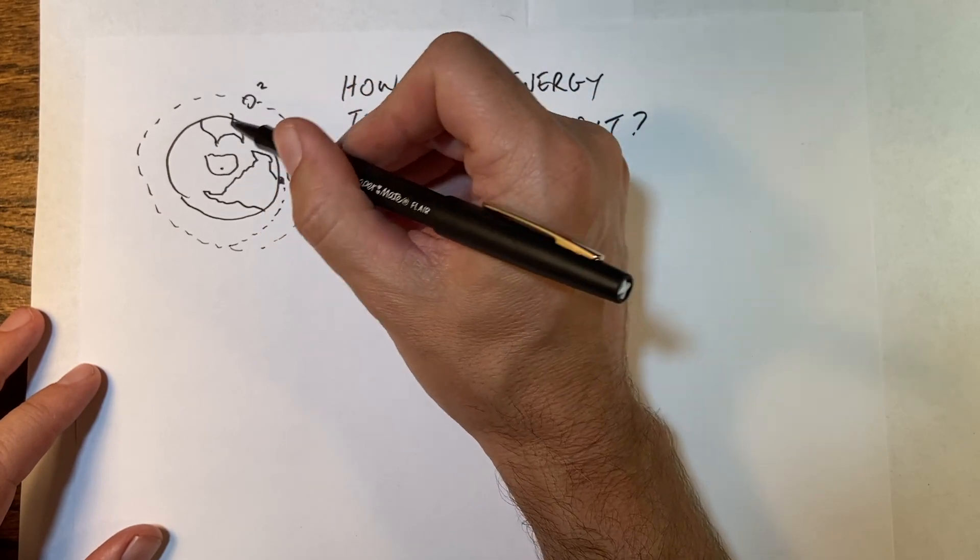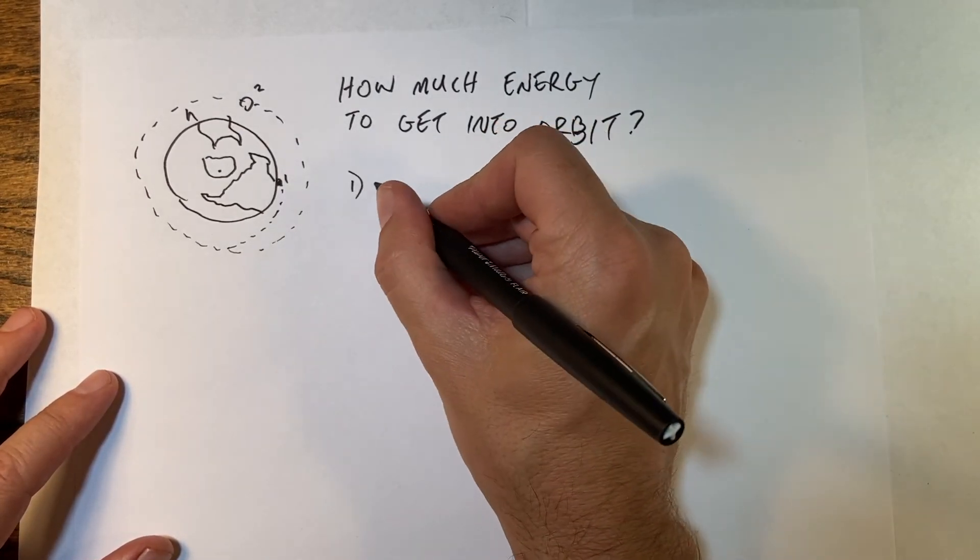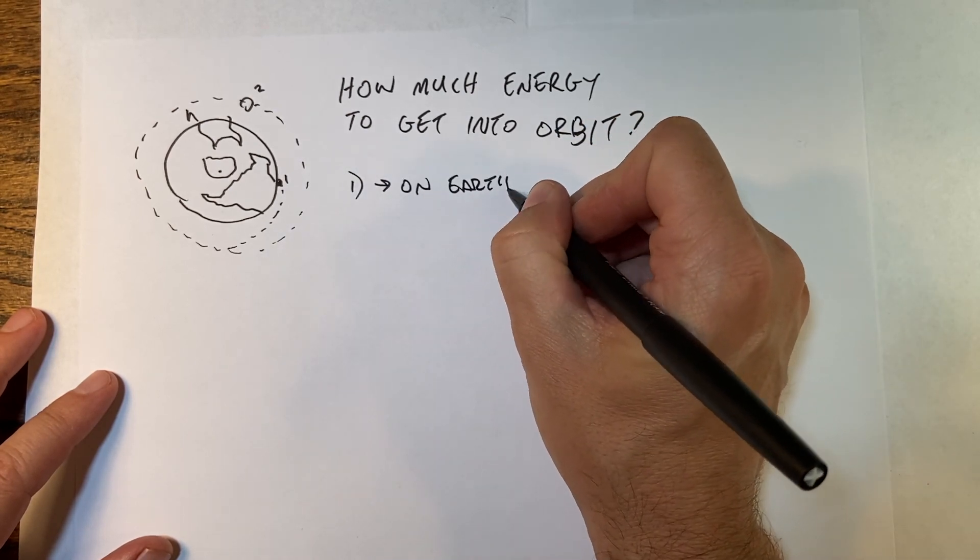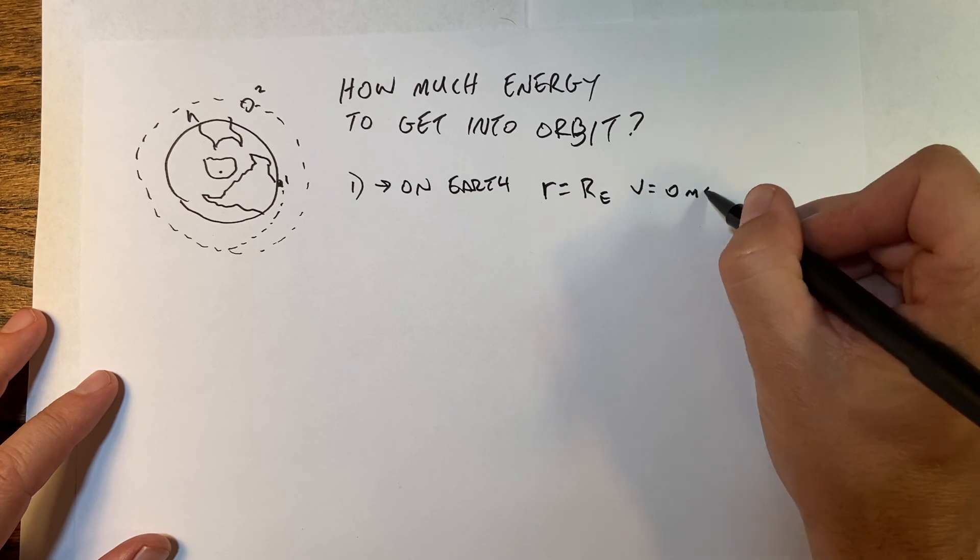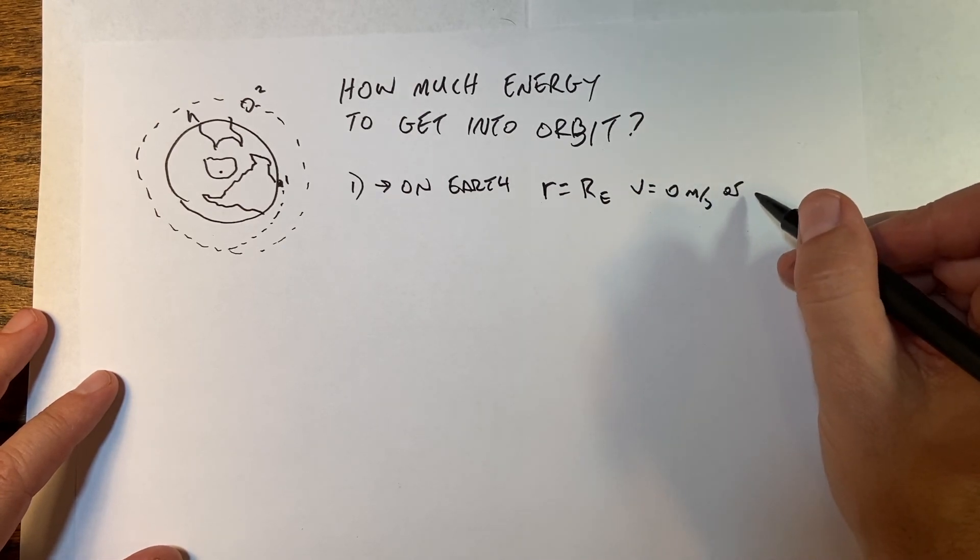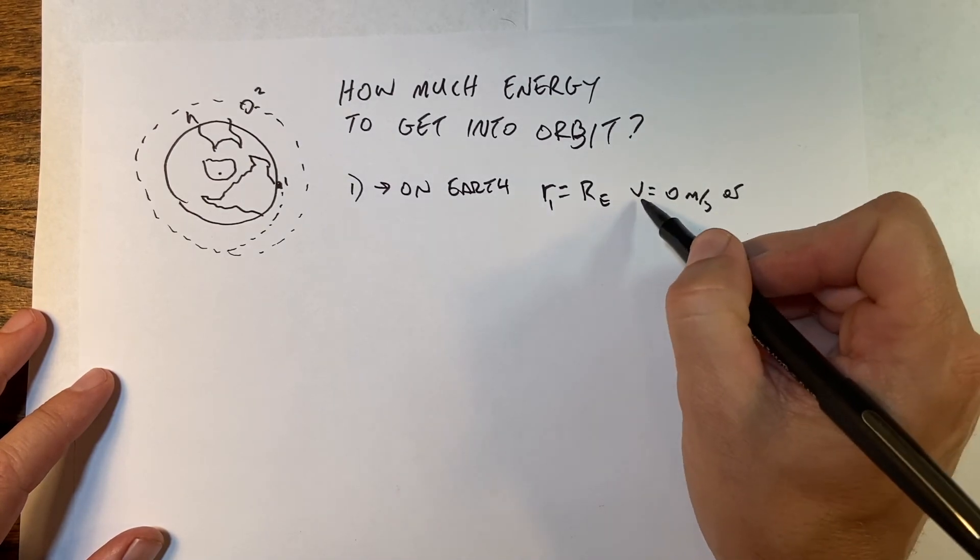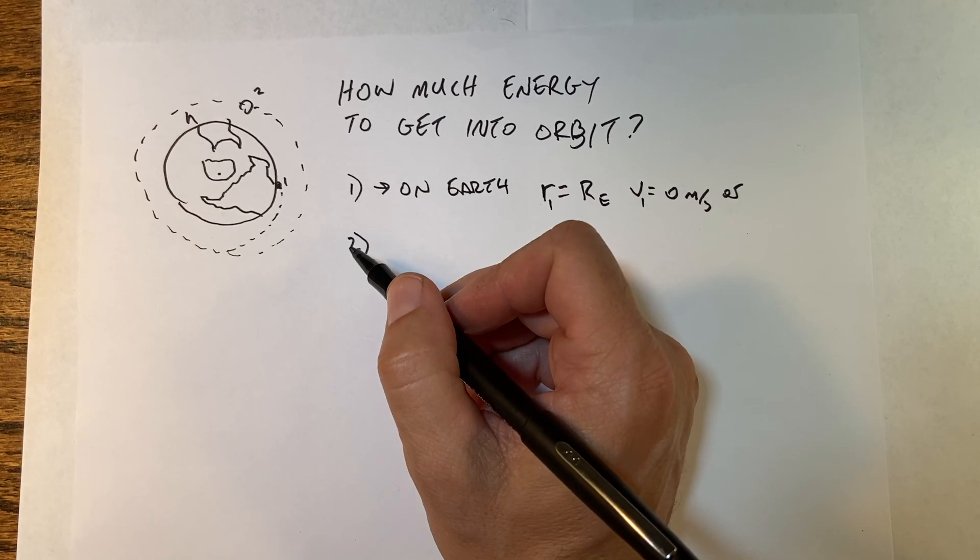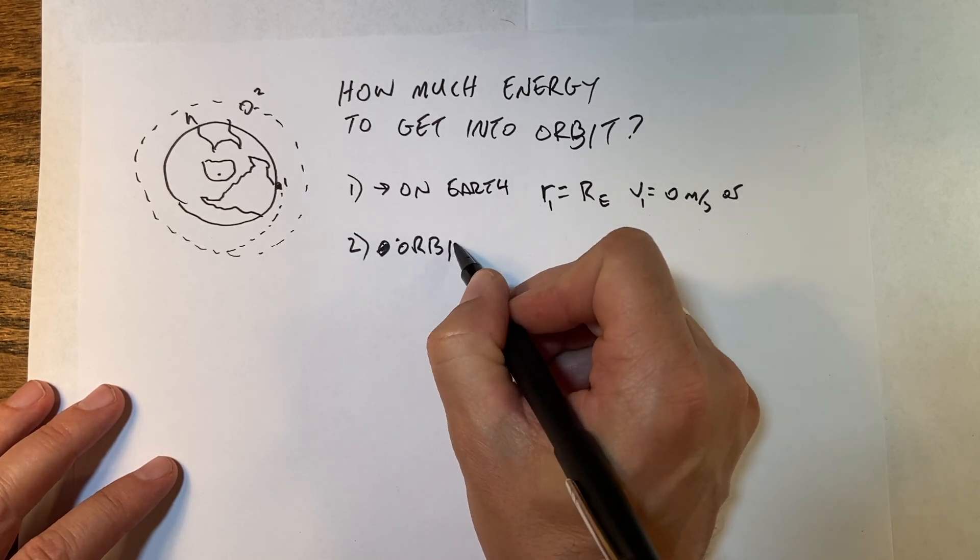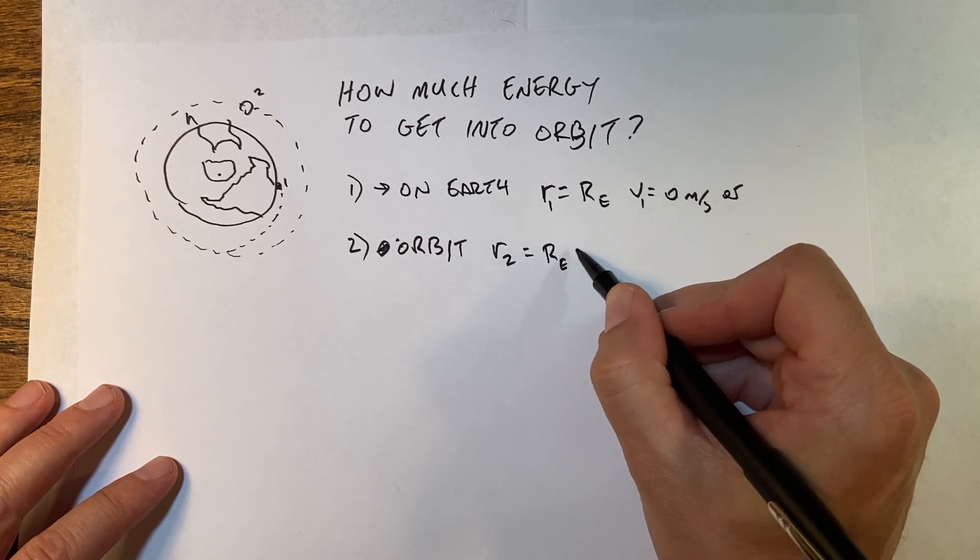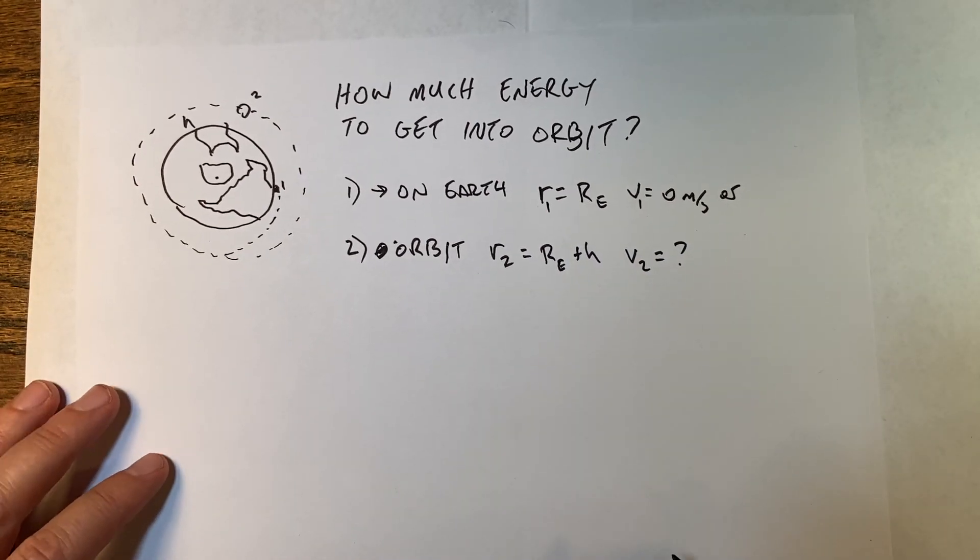How much energy does that take? We're going to look at the energy it requires to get something into orbit. Let's start here with position one and position two. At one it's on the earth and in two it's in orbit. Let's call this a height h, the altitude above the earth.